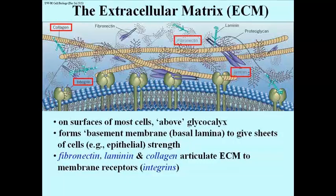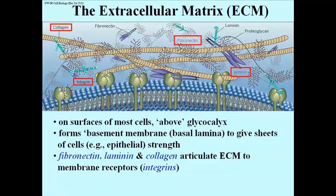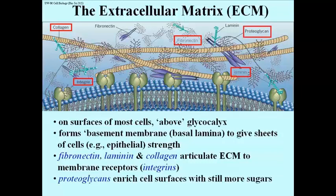We also have fibronectin, a multifunctional protein with many binding sites. You can see fibronectin molecules binding to laminin, binding to collagen, binding to proteoglycans, and of course binding to integrin when it gets close enough to bind to one of the integrin receptors on the plasma membrane. So this is obviously a very complex system designed to build up a structure immediately outside the cell that will attach a cell to a surface and give it a great deal of strength in a tissue. Proteoglycans function to enrich the surfaces of cells with even more sugars than the sugars that are covalently bound to the surfaces of cells.